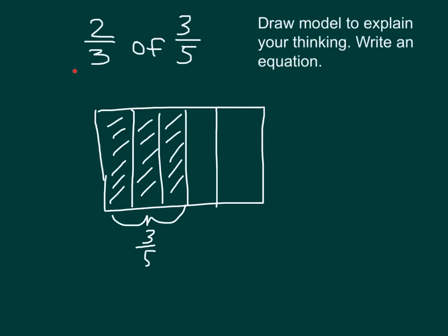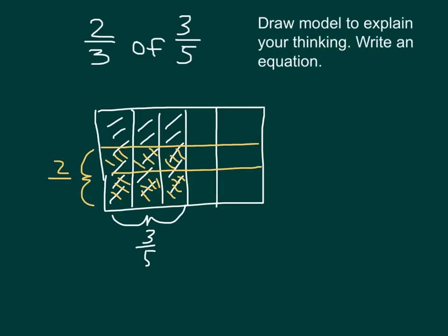However, this expression is saying two-thirds of three-fifths. So we will make horizontal lines to divide the three-fifths into thirds, because we want two-thirds of it. We draw two lines to divide it into three parts. This says two-thirds, so we are looking at two-thirds of the three-fifths, and that's why this is two-thirds there.